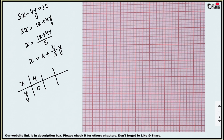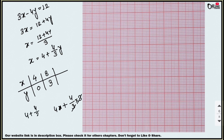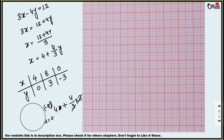Next, let y equal to 3. Then x equals 4 plus (4/3) times 3 — the 3s cancel — giving 4 plus 4 equals 8. So if y equals 3, x equals 8. Now if y equals minus 3, the 3s cancel again: 4 minus 4 equals 0. So if y equals minus 3, x equals 0.